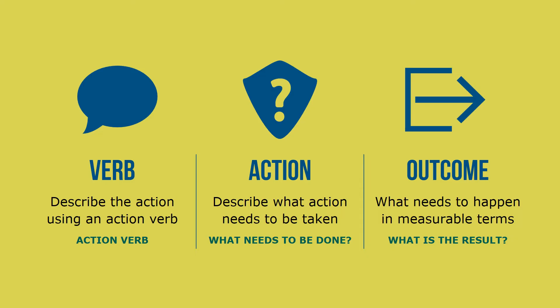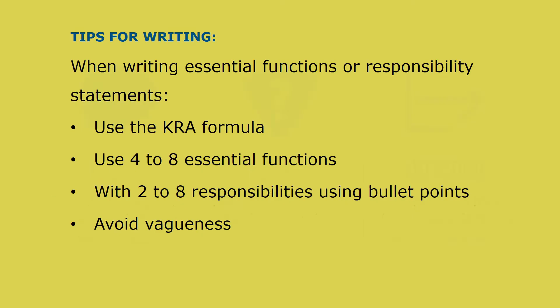Next, you describe what action needs to be taken, asking yourself what needs to be done. Finally, you define an outcome — describing what needs to happen in measurable terms, asking: what's the result I'm looking for? When writing KRA statements, always use the formula for essential functions and responsibilities. Use four to eight essential functions to describe a position, and within each, define two to eight responsibility statements using bullet points. Avoid using vague verbs such as handle, survey, or arrange, as these do not give the reader a clear picture of the true work of the position.